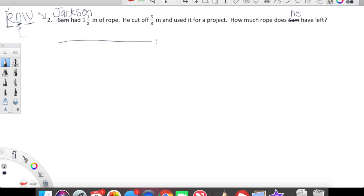I'm going to draw a rope. Jackson has all together one and one half meters of rope. He cut off five-eighths of the meter. And we want to know how much rope does he have left for his next project. We're looking for this question mark. Our expression for this is going to be one and one half minus five-eighths. And the answer will give us the question mark.